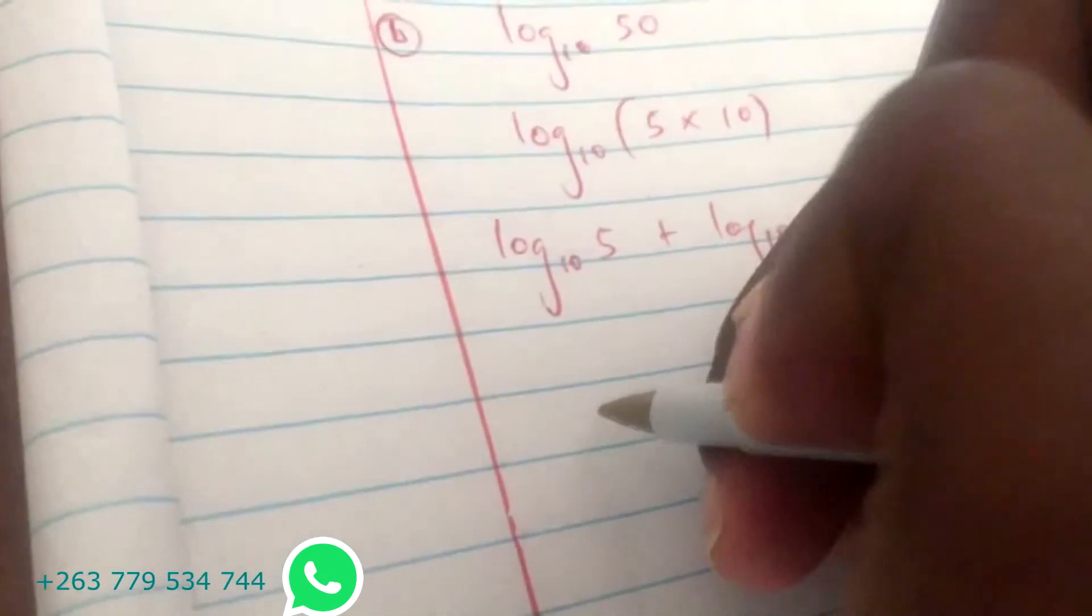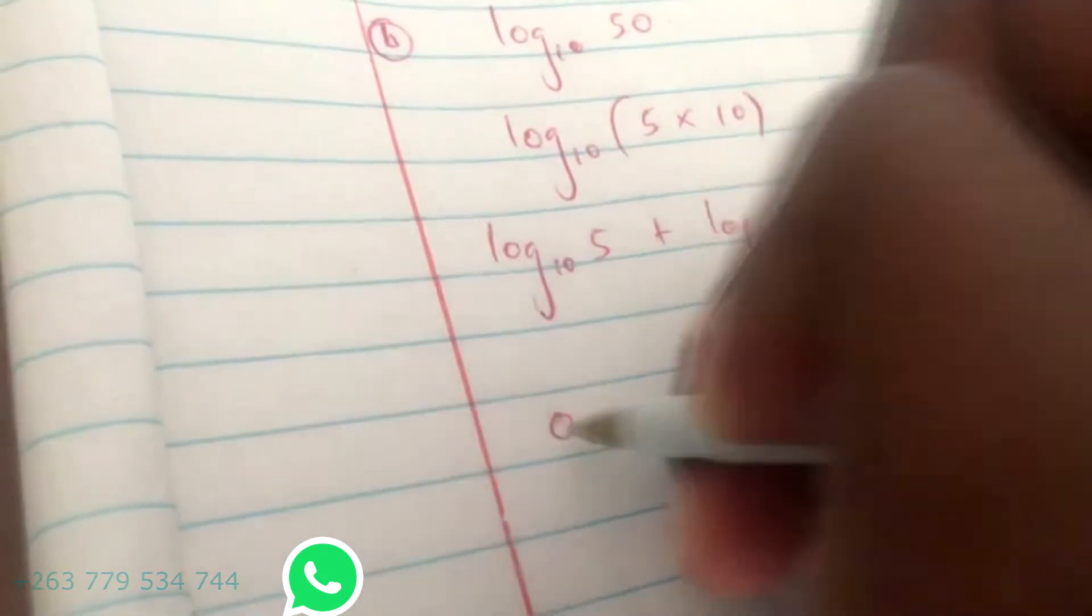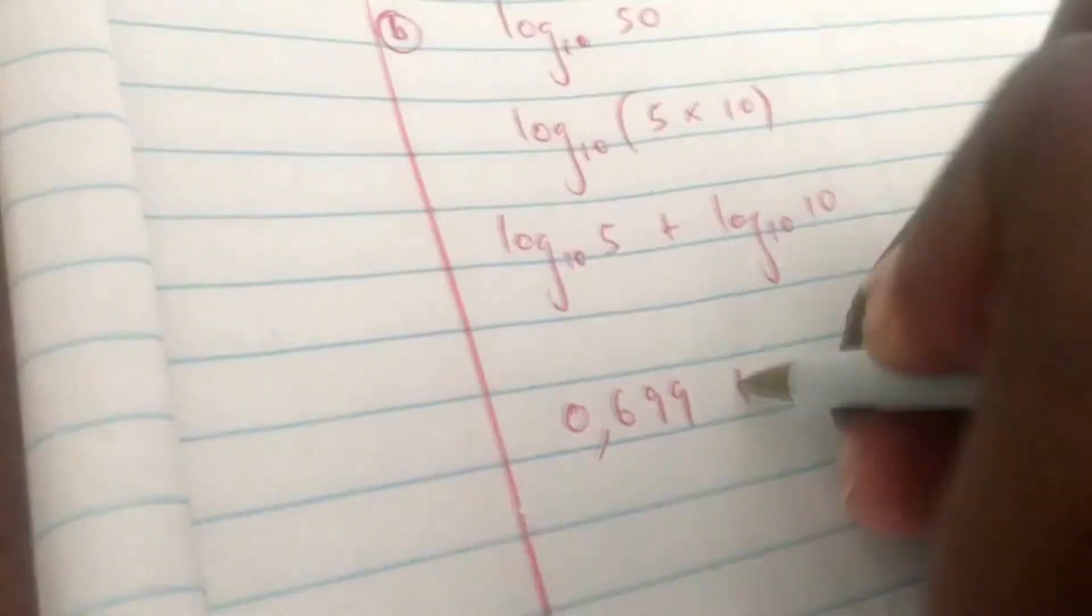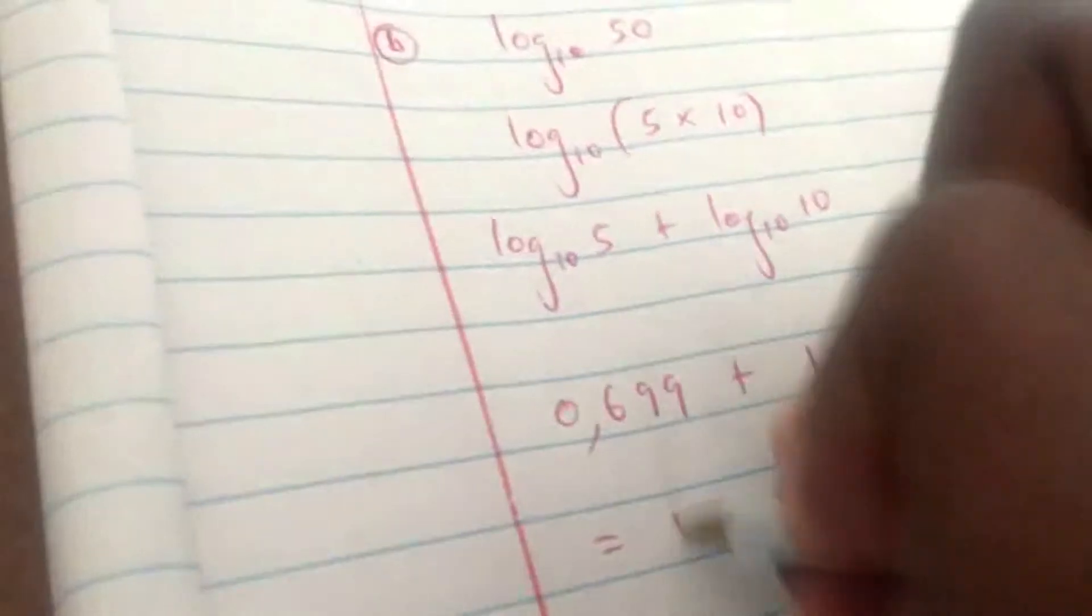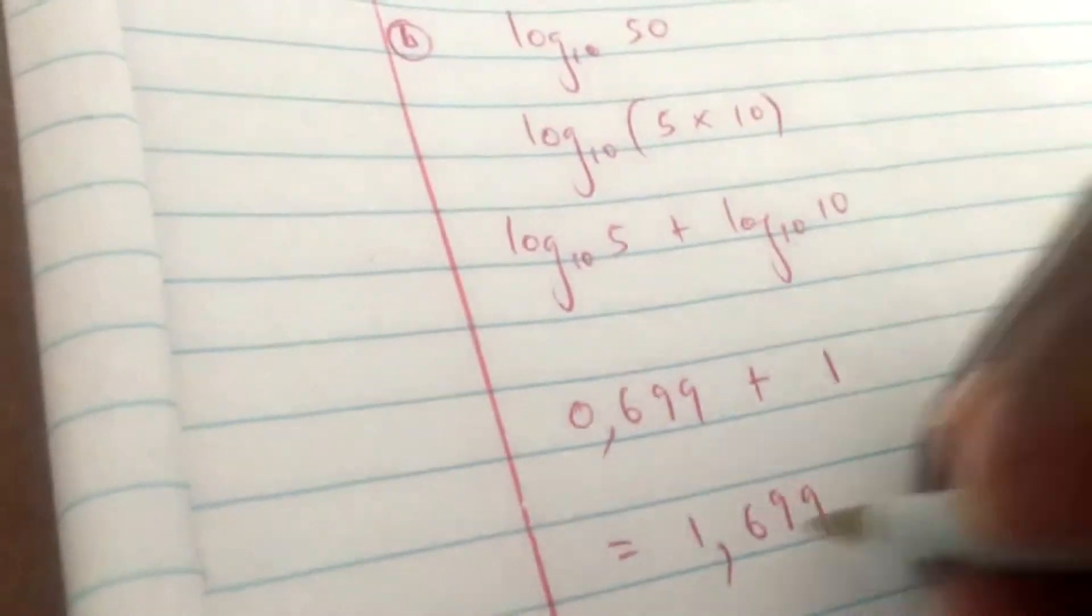Log base 10 of 5 still is that value, so this will be 0.699 plus log base 10 of 10, that will be 1. Your answer will be 1.699.